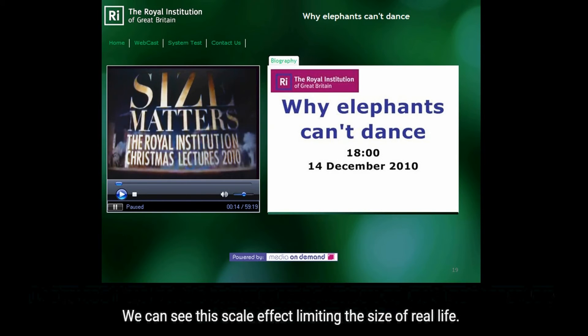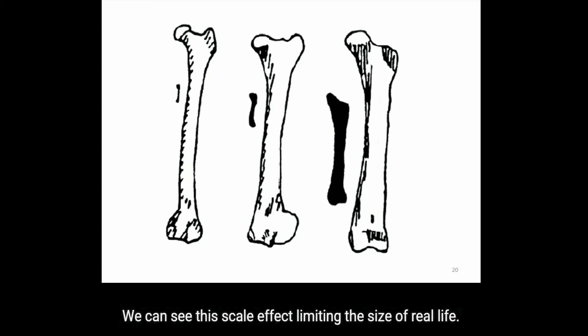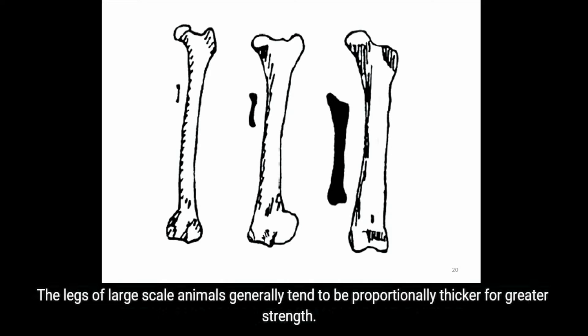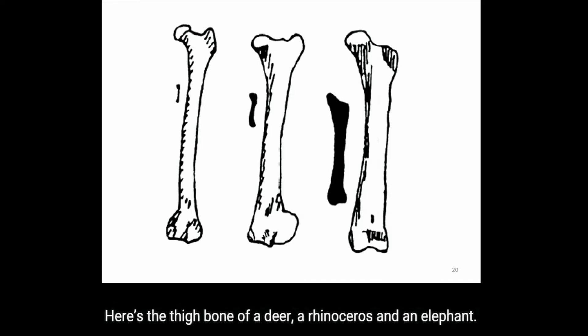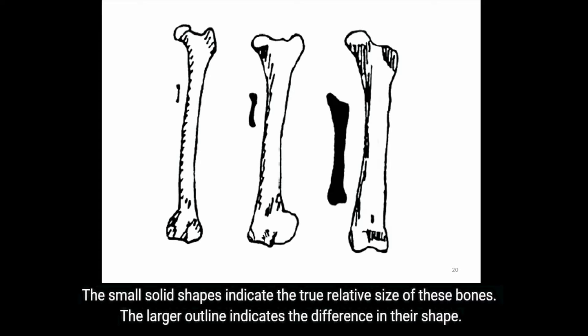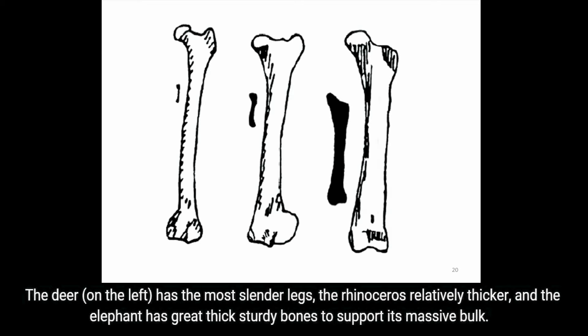We can see the scale effects limiting the size of real life. The legs of large scale animals generally tend to be proportionally thicker for greater strength. Here is the thigh bone of a deer, a rhinoceros and an elephant. The small solid shapes indicate the true relative size of these bones. The larger outline indicates the difference in their shape. The deer on the left has the most slender legs, the rhinoceros relatively thicker, and the elephant has great thick sturdy bones to support its massive bulk.